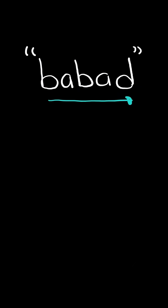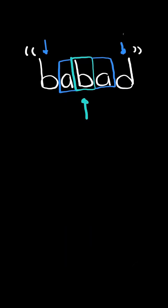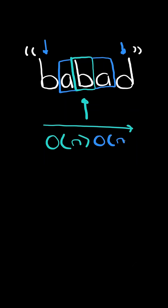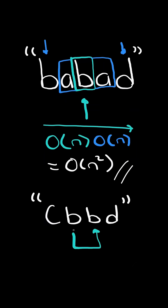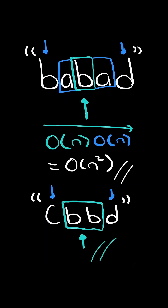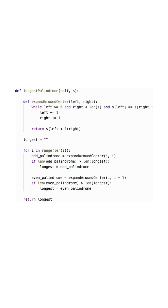A better approach is to iterate through the string and for each character, we check the surrounding characters if they're equal. If they are, then we keep expanding. Iterating through the string takes O(n) time and expanding takes O(n) time for a total of O(n²). But we also need to check even length palindromes, so we make sure to expand outwards from two characters as well. Here is the code to do so.